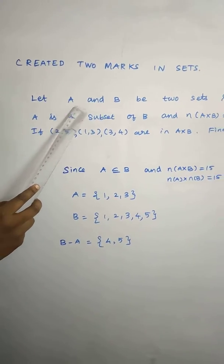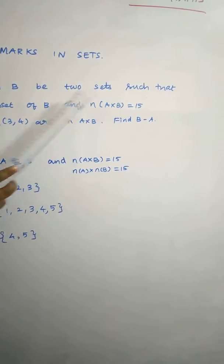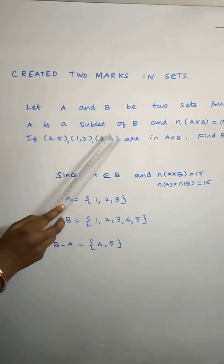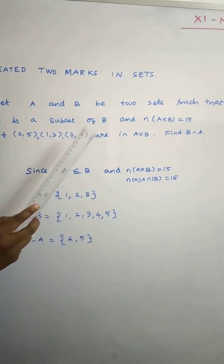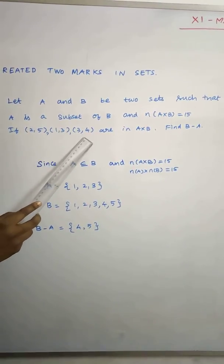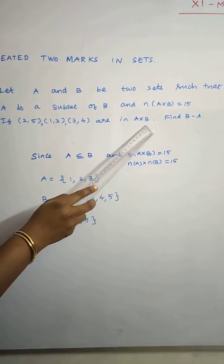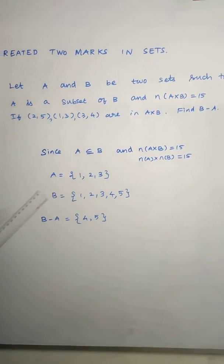First sum: Let A and B be two sets such that A is a subset of B and n of A cross B equals 15. If (2,5), (1,3), (3,4) are in A cross B, find B minus A.